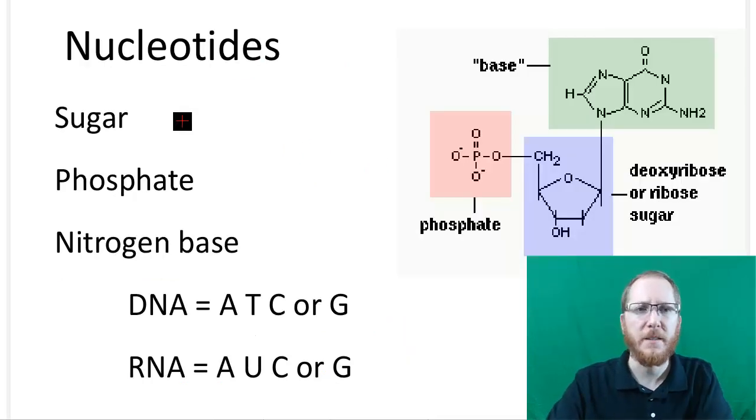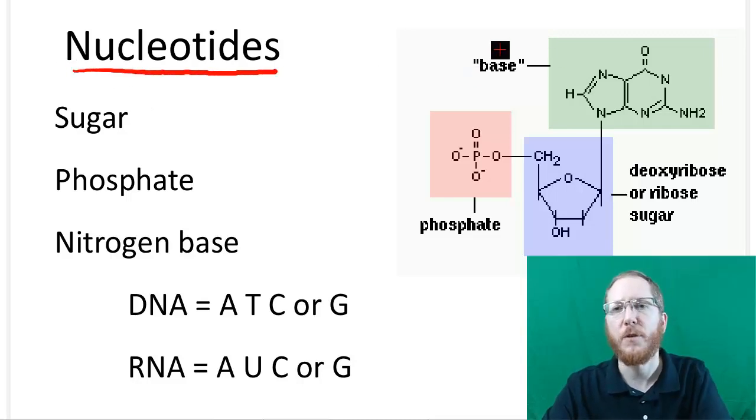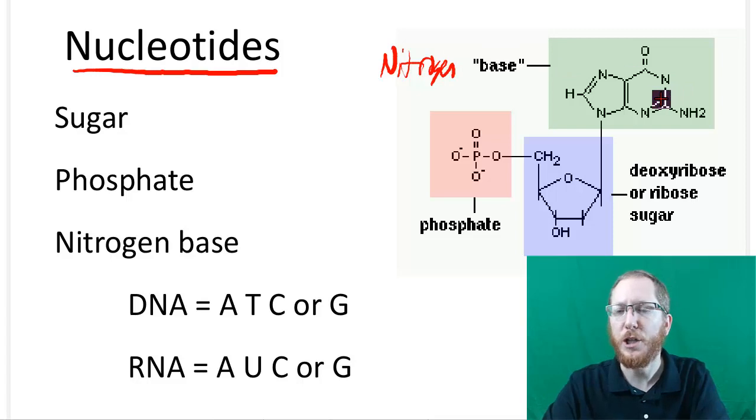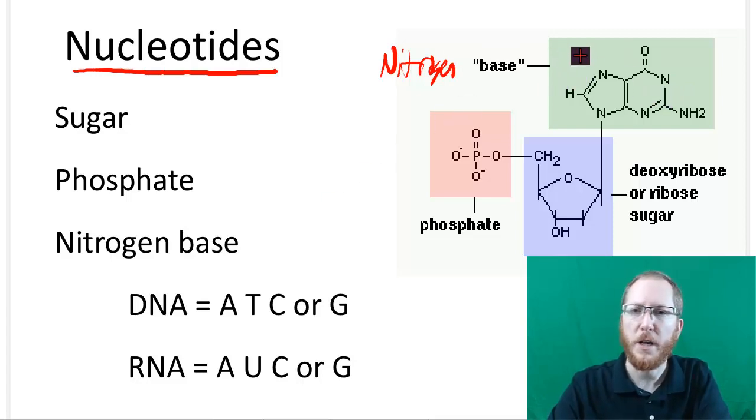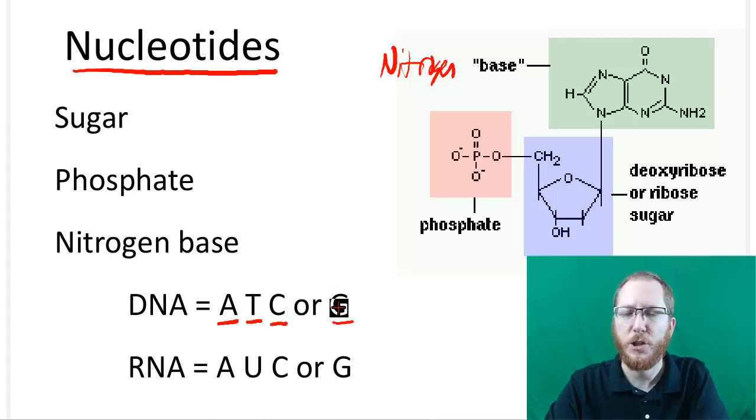Nucleotides are made of three parts. They have what's called a base or a nitrogen base. That's the part that will actually change because there will be several different types of bases. If you're looking at the nitrogen base in DNA, you'll see they have adenine (A), thymine (T), cytosine (C), and guanine (G).